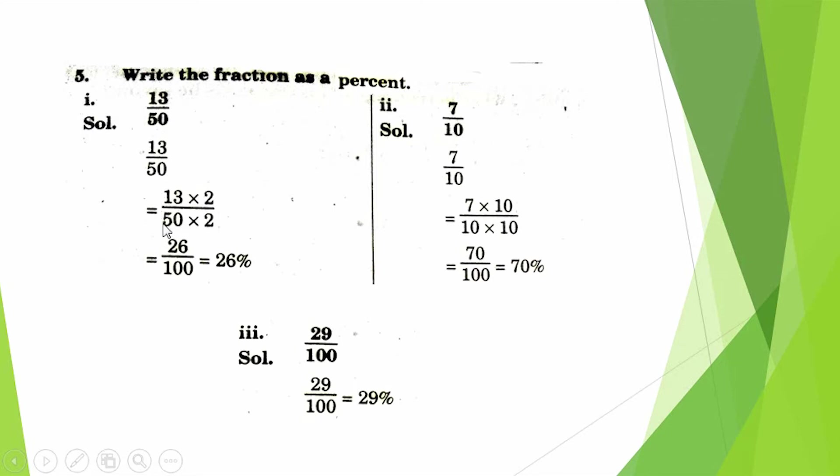Question 5: Write the fraction as a percentage. 13/50. First of all, we make 100 at the denominator. There is 50. When we multiply by 2, the denominator becomes 100. Therefore, we multiply 2 in numerator and denominator. Answer becomes 26/100. Now we convert this to percentage: 26%.